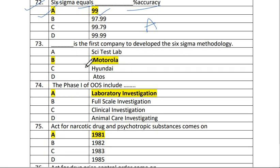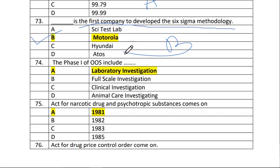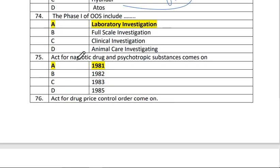Next is question number 73. Motorola is the first company to develop the Six Sigma methodology. The answer is B, Motorola — the first company to develop Six Sigma methodology.